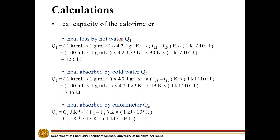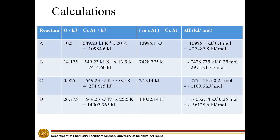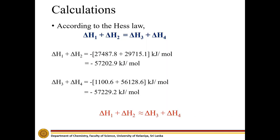First, calculate the heat lost by the hot water Q1 and the heat absorbed by the cold water Q2. Taking the heat absorbed by the calorimeter as Qc, where Cc is the heat capacity of the calorimeter, use the obtained values to find the heat capacity of the calorimeter. Then recalculate the heat exchanged and enthalpy change of each reaction. After accounting for the calorimeter's heat capacity, the sum of the enthalpy changes of path 1 is nearly equal to the sum of the enthalpy changes of path 2.